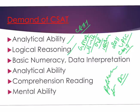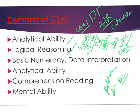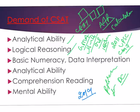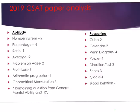Now we will do a brief analysis of the 2019 CSAT paper to know how many questions come from the most important areas. In the 2019 paper, looking at aptitude and reasoning, the most important areas and all the details are mentioned here. From number system, 2 questions appeared; from percentage, 4 questions — percentage is a topic that helps a lot in other topics as well.